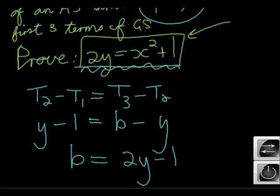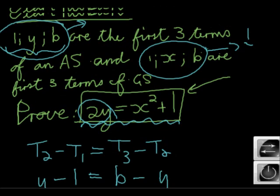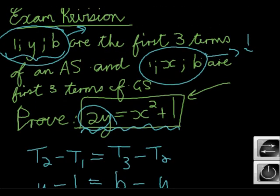Oh, I seem to be getting closer. 2y, if that plus 1 goes to the other side, it's minus 1. Cool. So now let's use the second part of the question, where they say this is a geometric sequence. What do I want to use when I have a geometric sequence? Common ratio.